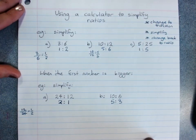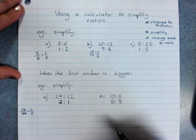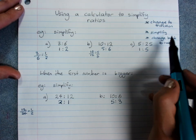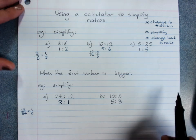So that's how to use a calculator to simplify ratios. Change it to a fraction and simplify it with the calculator, and then write your answer back as a ratio.